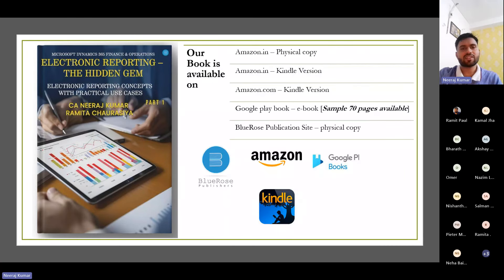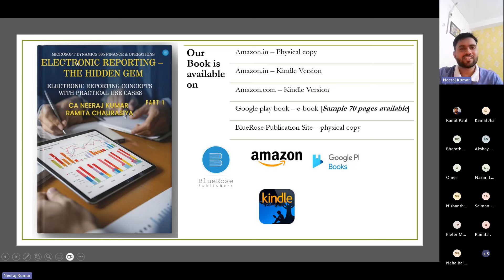Before moving forward, I also want to mention our book, which we have published along with Ramita Chaurasiya. Our book is available on Amazon, Google Play, and the Blueros publication site. You can search 'Electronic Reporting book on DAX 365' and you will get all the links directly. In the Google Play book, we have 70 sample pages so you can reference the sample pages and also see the index.